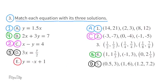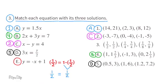E: y equals x plus 1. One half equals negative one half plus 1. Negative one half plus 1 is the same as 1 minus one half. One half equals one half. The ordered pairs one half and one half are found in solution 3. Solution number 3 is a match with equation E.